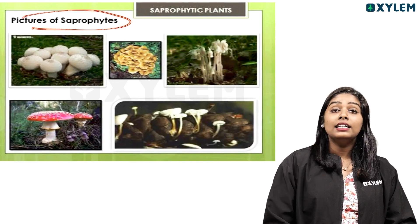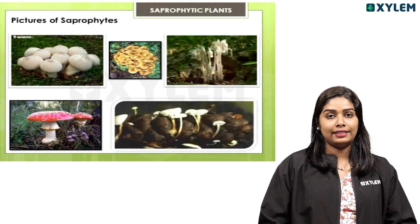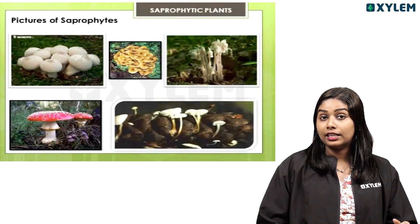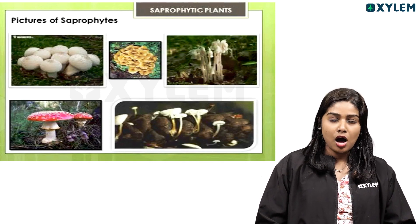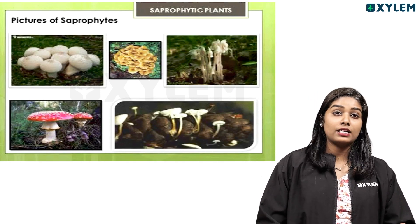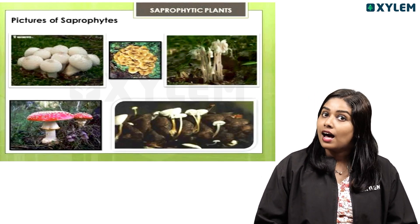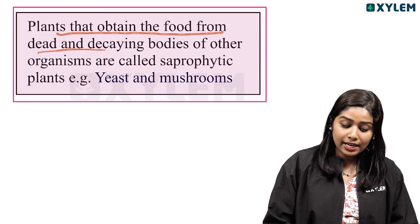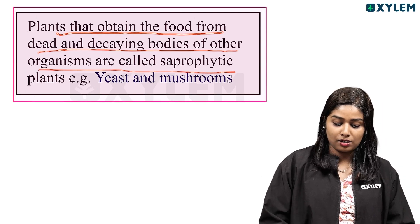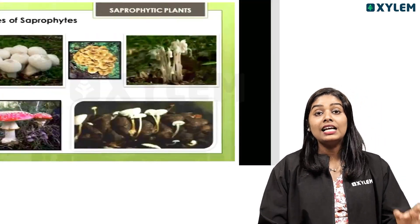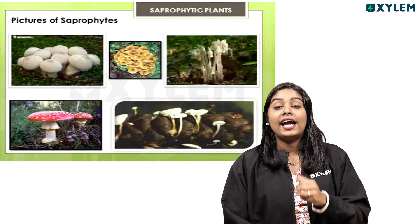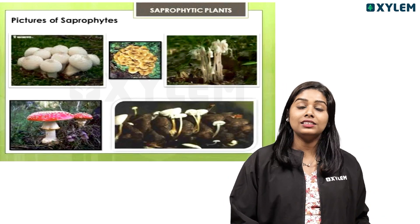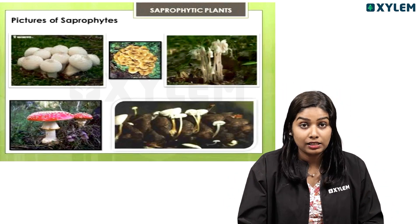We are going to study saprophytic organisms — saprophytes. Saprophytes obtain their food from dead and decaying bodies of other organisms, so they are called saprophytic plants. If you consume dead organic matter, you take nutrition from that dead organic matter — we call such a plant a saprophytic plant.